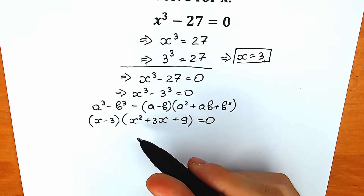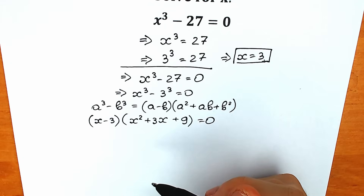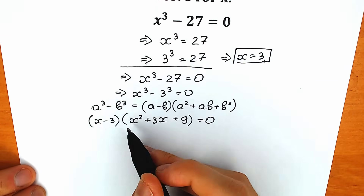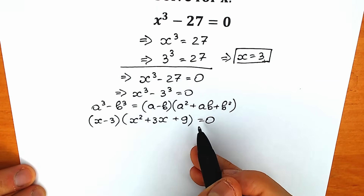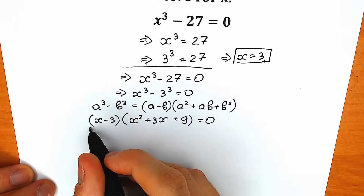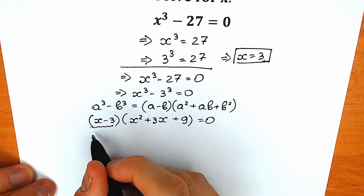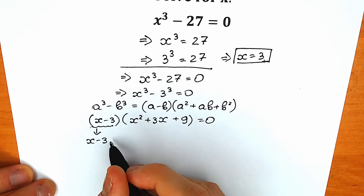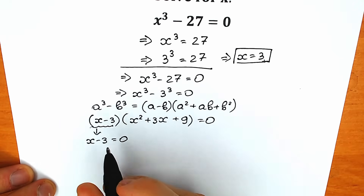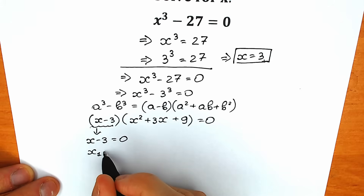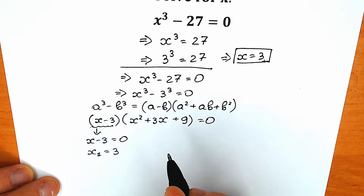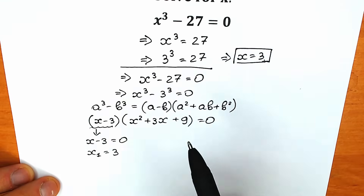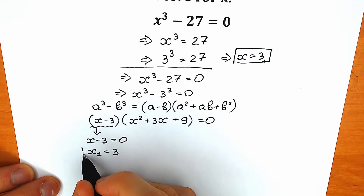We have a product of two parentheses equal to zero. The product equals zero when the first parenthesis equals zero: x minus 3 equals zero, so x is equal to 3. As you can see, this is the same answer as before.